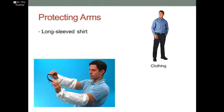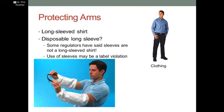Let's talk about protecting the arms. There are several ways to protect the arms from splashes. Clothing is supposed to be long pants, shoes and socks, and long-sleeve shirts. There are disposable long sleeves available, but we now have regulators saying that sleeves are not a long-sleeve shirt, so they're not the correct chemical protection. That is a violation of the label if you use a long sleeve as opposed to a long-sleeve shirt. So the use of these sleeves may be a label violation.